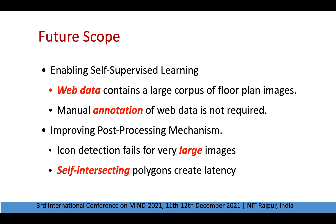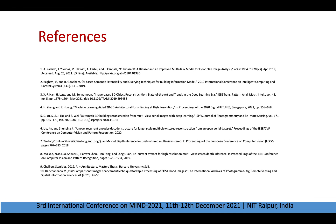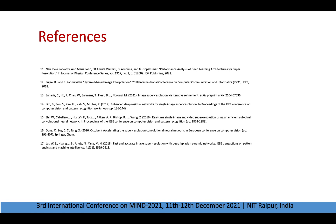Improving the post-processing mechanism is also quite important. As seen with the junction point detections, icon detection fails for large images, resulting in catastrophic failure when polygons self-intersect. Because so many junction points are detected due to the nature of the heat maps, that self-intersection creates a lot of latency, seen with many images in the CubiCasa dataset as well. Simple upscaling creates these problems, so the post-processing mechanism needs to be improved. Thank you all for listening — this was my project on enhanced object detection through super resolution on floor plans, and the code is available in the link description below.